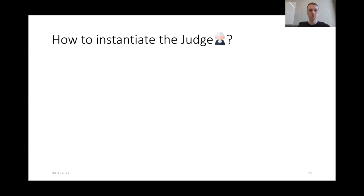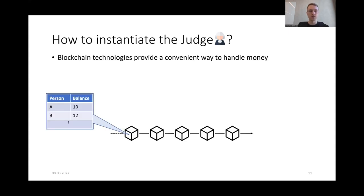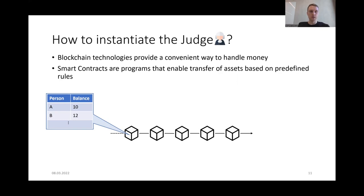We now turn to the question of how to instantiate a judge party. While the definition in general allows a single party to act as a judge, our construction utilizes blockchain technologies. This way, instead of putting trust into a single party, we need to trust the correctness of the system, which is based on an honest majority assumption. Blockchain technologies have several advantages: an integral part is maintaining a ledger where parties possess coins and can transfer them between themselves. Many blockchain technologies also allow execution of smart contracts, which are small programs enabling money transfer based on predefined rules.